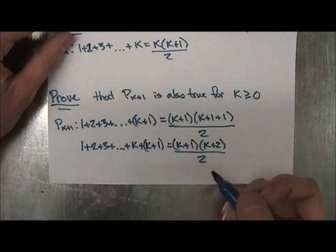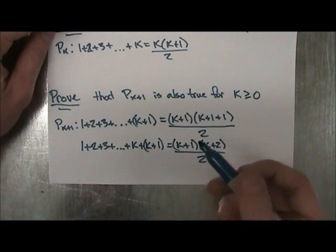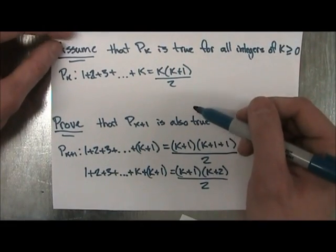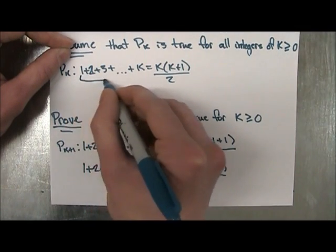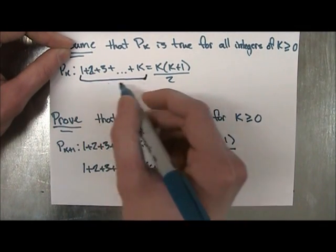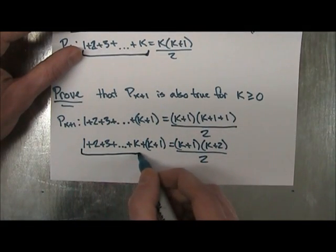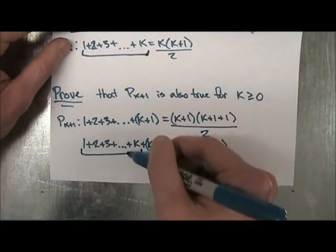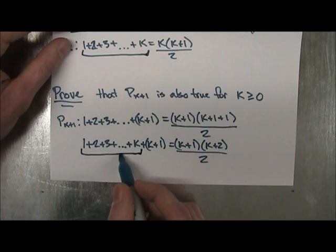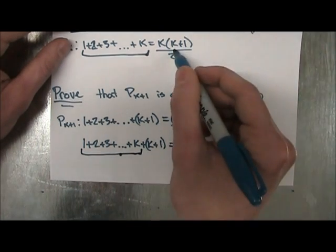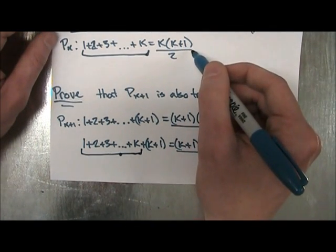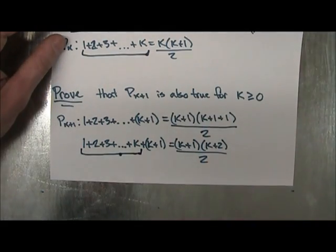So what we can do, actually, is that we can go back to our Pk, and we notice that we have this series of terms right here, and we also have it right here. So because these are equal to each other, we can make this part of Pk plus 1 equal to this part of Pk. So we're going to put that in right here.